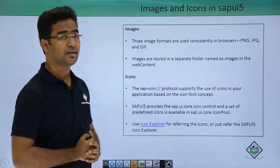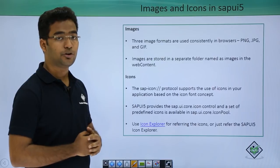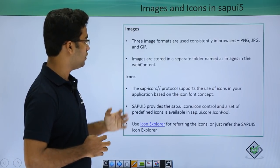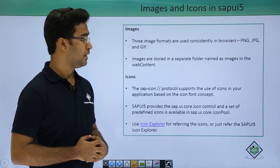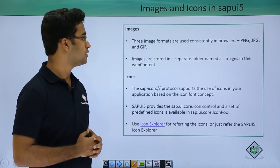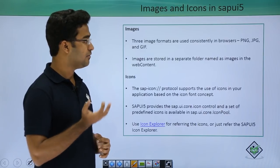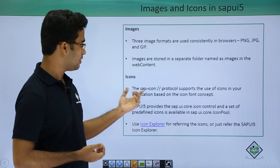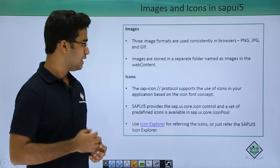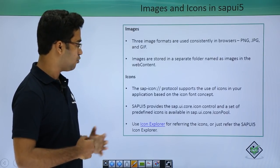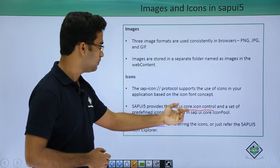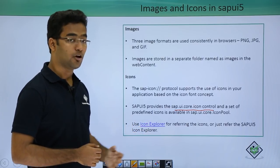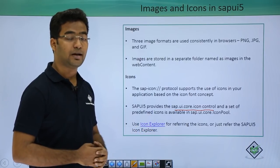Moving to the next slide, we are looking at using images and icons in SAP UI5. There are three image formats supported by SAP Web IDE: PNG, JPG, and GIF files, and these formats are used consistently in browsers. Images are stored in a separate folder named 'images' inside the web app or web content. For icons, SAP already provides SAP icons using the protocol 'sap-icon://'. This protocol supports icons based on the icon font concept, and SAP UI5 provides the SAP UI core icon control — a set of predefined icons available in the SAP UI core icon pool. In the icon explorer, you can see all predefined icons that SAP UI5 provides.